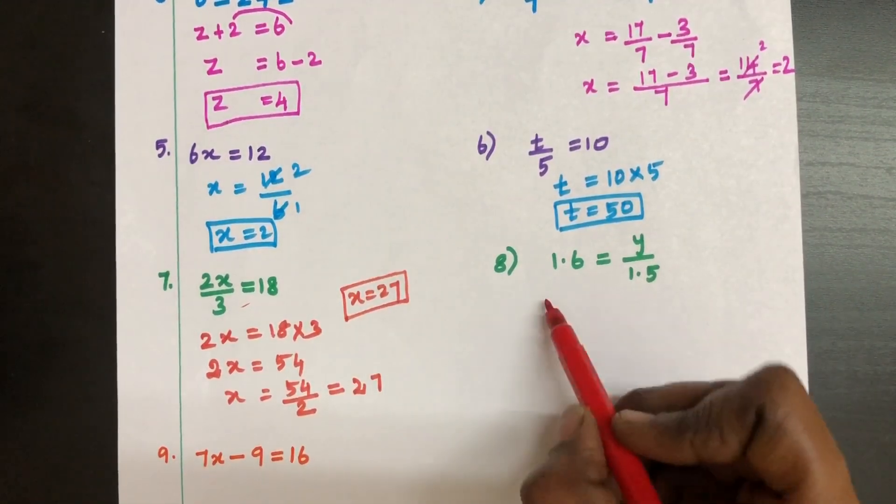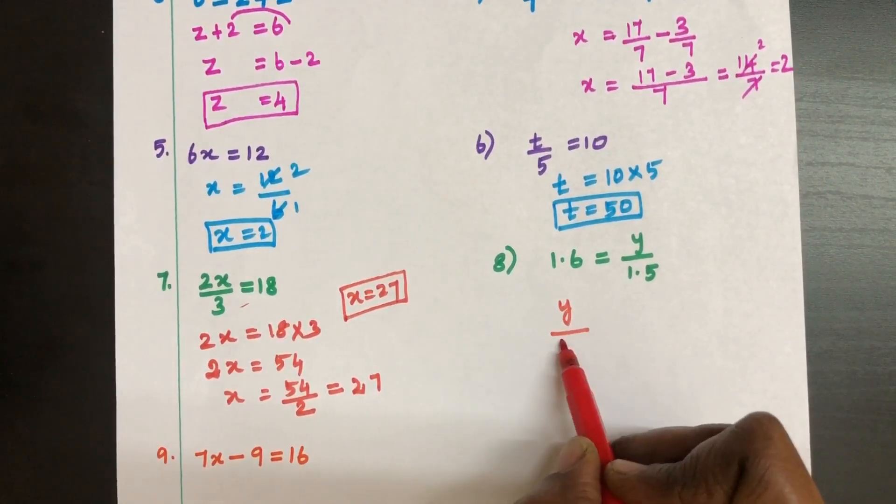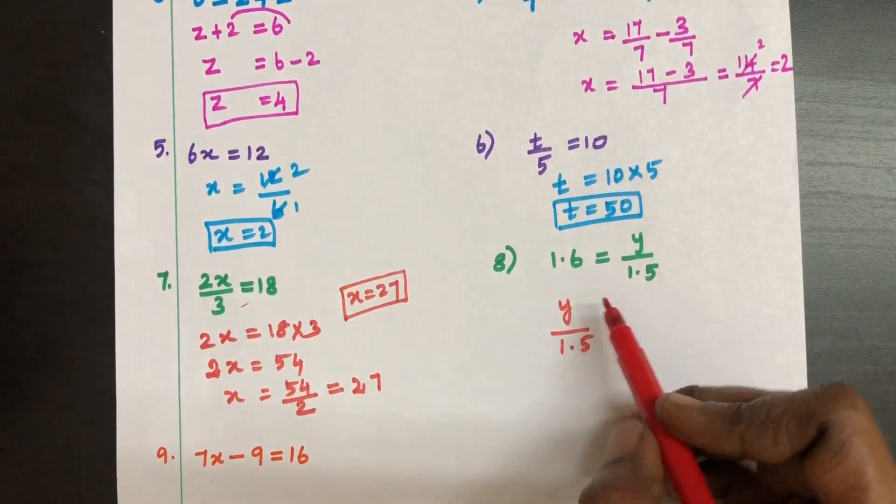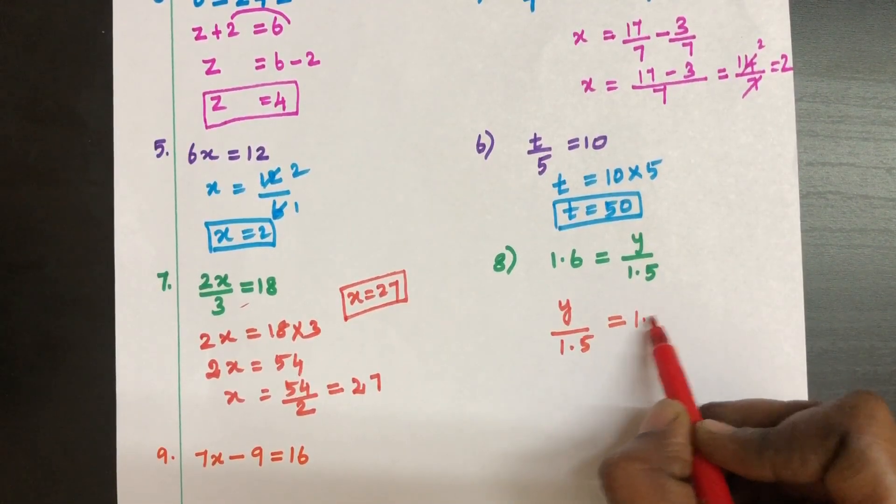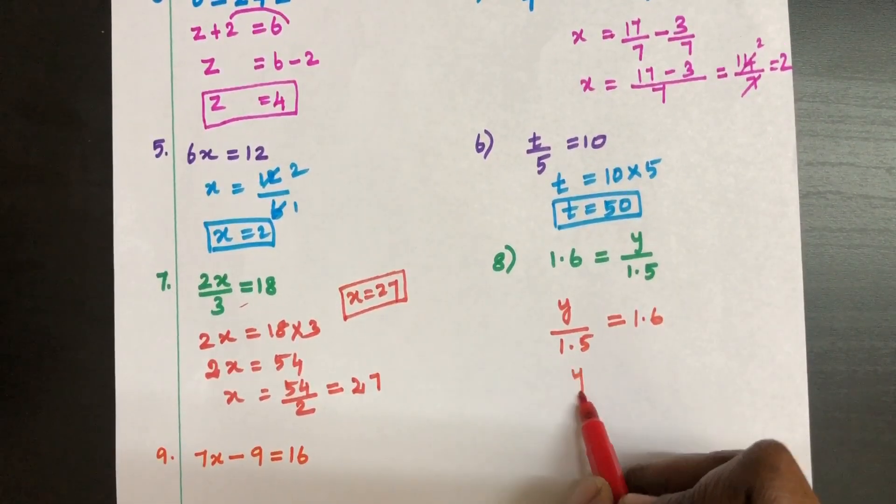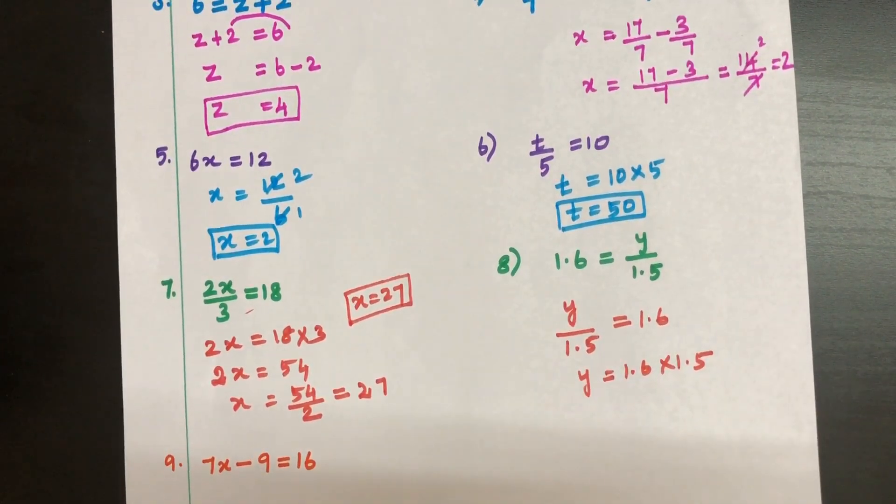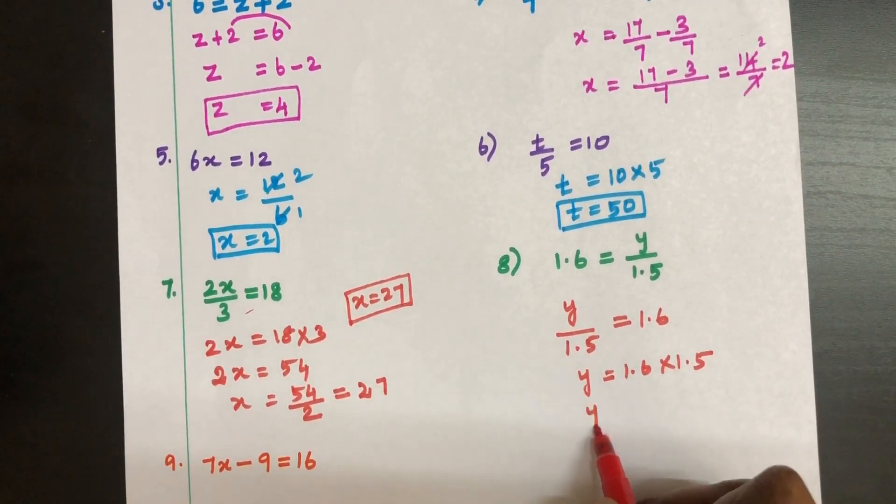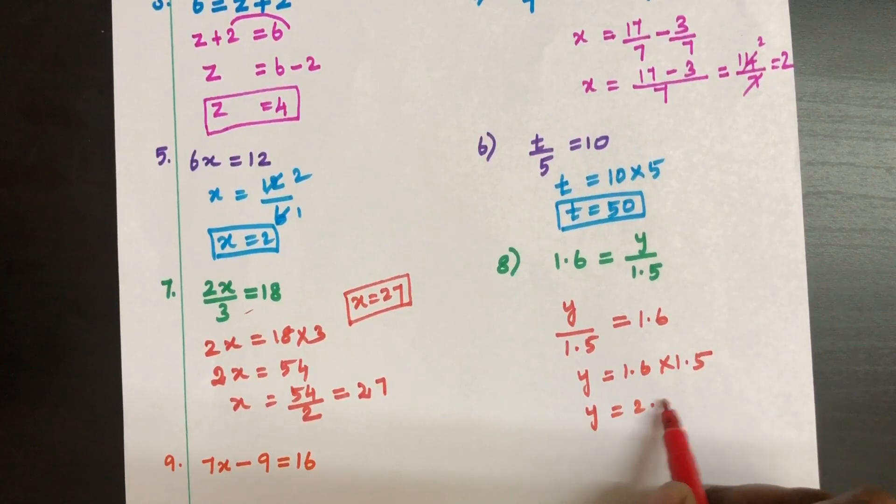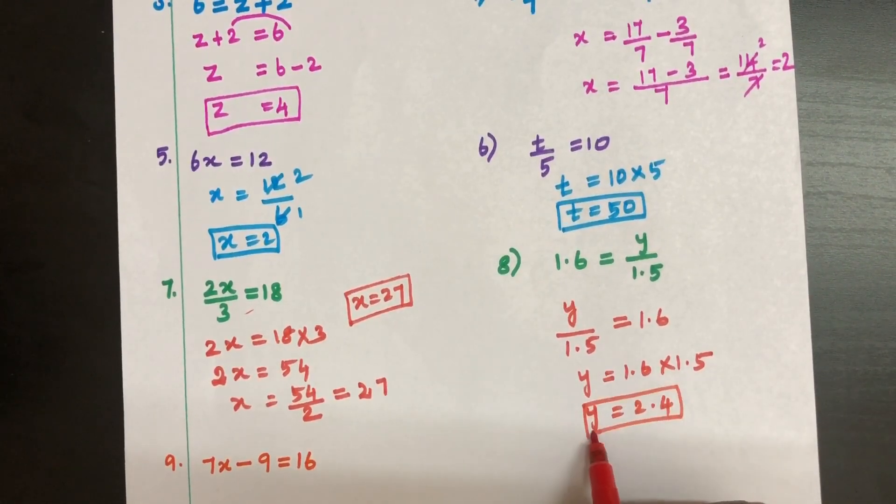Now we can write like this. Y by 1.5 is equal to 1.6. So Y is equal to 1.6 into 1.5. Y is equal to 2.4. This is the value of Y here.